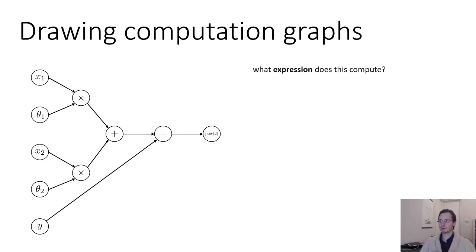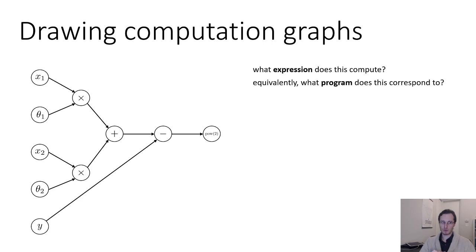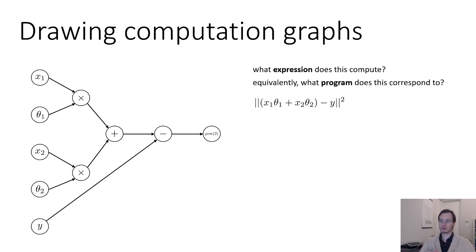This computation graph describes a program or a function — specifically, it represents linear regression. We compute x1 times theta1 plus x2 times theta2; that's our model, our estimate of the correct regression output. Then we subtract y and square the difference, which gives us the mean squared error loss. So this is the mean squared error loss with a linear regression model.